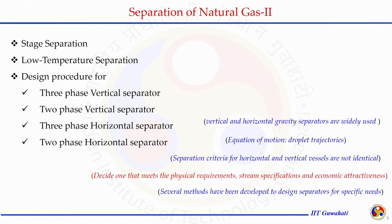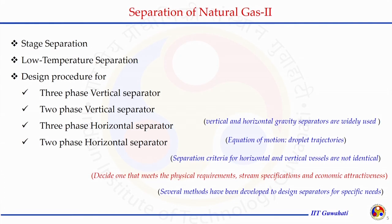The equation of motion — as shown in the previous slide — and the trajectory of the droplet will decide the type of forces acting on it and which direction the droplet moves. Separation criteria for horizontal and vertical vessels are not identical; the trajectory of the droplet is different due to different force balances. The choice between them depends on physical requirements based on stream specifications and economic attractiveness. Several methods have been developed over time to design separators.